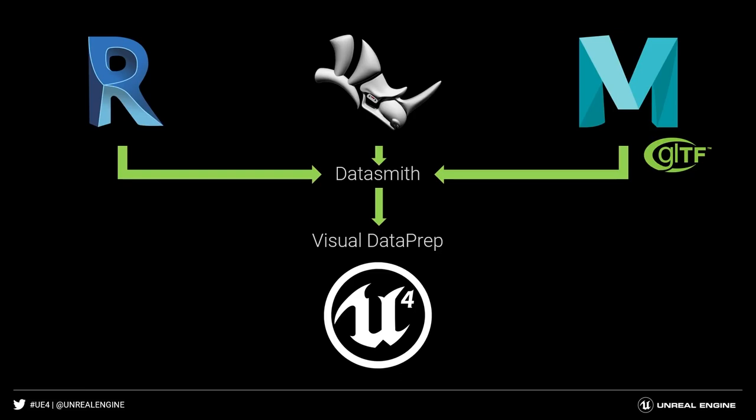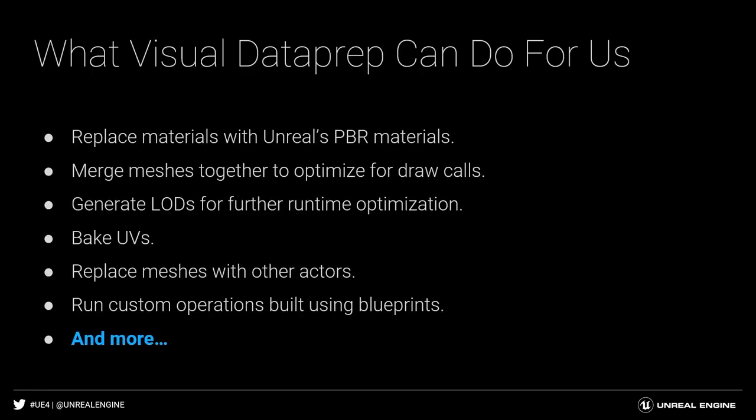We're going to import the Datasmith files into Unreal, but rather than use the normal way of importing those files by simply clicking the Datasmith button, we're going to use the Visual Dataprep tool. The tool can do things like creating LODs, setting up light map UVs, substituting materials using material data tables, deleting and merging objects — helping to optimize your draw call count — based on selection factors like object class, object name, metadata tags, layers, tagging, and more.